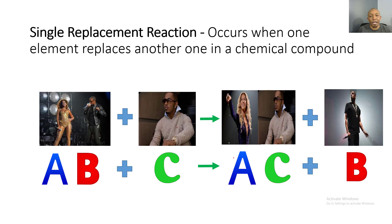Next we have a single replacement reaction, which occurs when one element replaces another one in a chemical compound. For example, you have Beyoncé and Jay-Z together, then Marquez Houston comes into the picture and Beyoncé gets with Marquez Houston, leaving Jay-Z on his own. If you look at our chemical equation, on the reaction side we have AB plus C, and on the product side A gets with C and B is left by itself — one element is replaced.